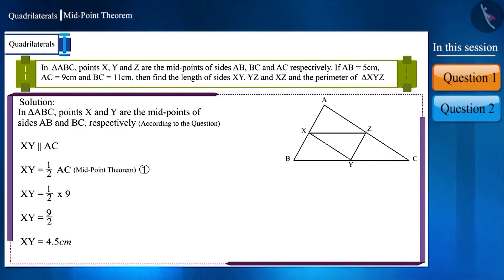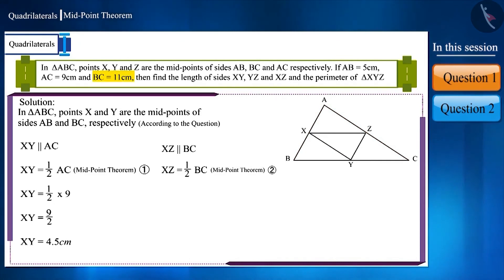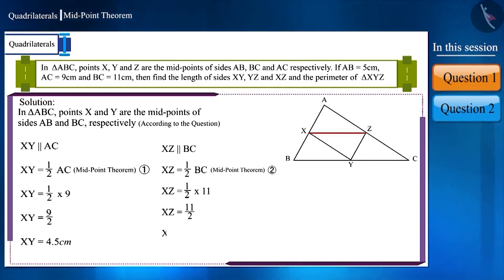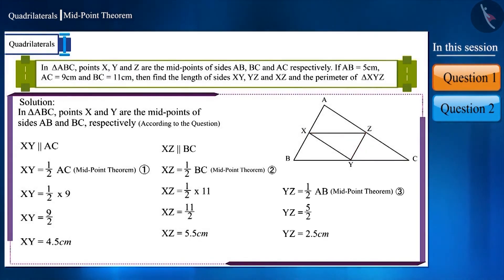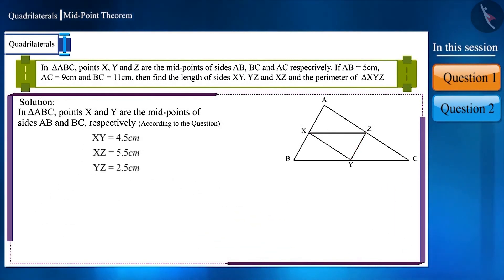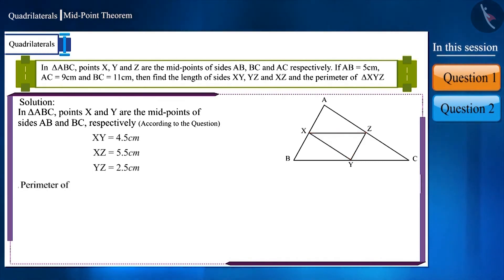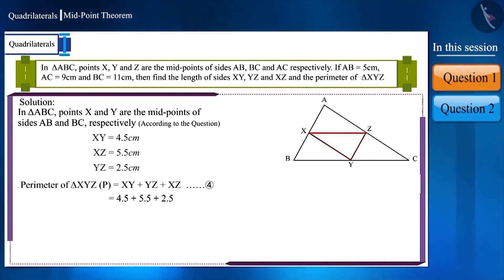Similarly, since X and Z are midpoints of AB and AC, by the midpoint theorem XZ is parallel to BC and equals half of BC. With BC equal to 11 cm, XZ equals 5.5 cm. Similarly we can find YZ — we get YZ equal to 2.5 cm. The perimeter of triangle XYZ equals the sum of its three sides XY plus YZ plus XZ, giving a perimeter of 12.5 cm.